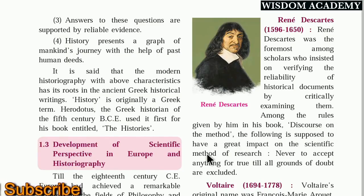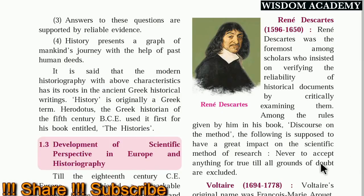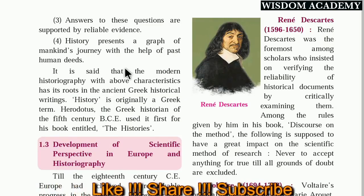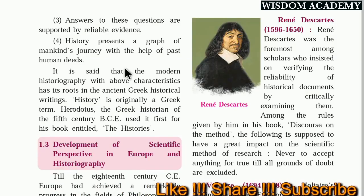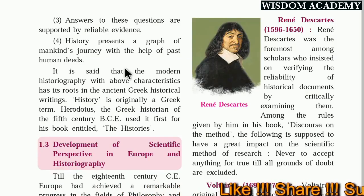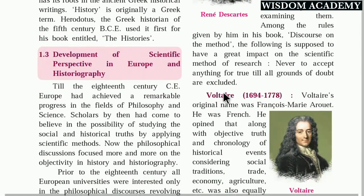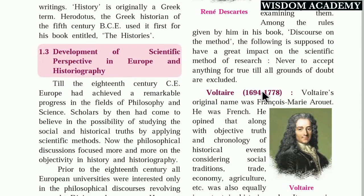Among the rules given by Descartes in his book 'Discourse on the Method,' the following had great impact on scientific research methods: never accept anything as true until all grounds of doubt are excluded. If someone tells us information, we should not accept it blindly — we must ask doubts and questions about it. Only when all doubts are satisfied does that information become correct.